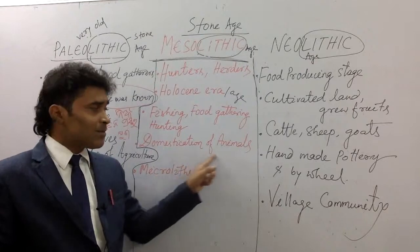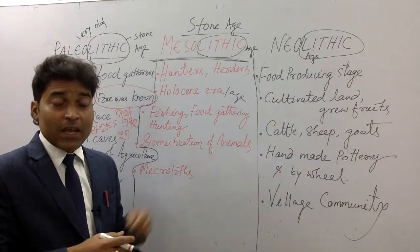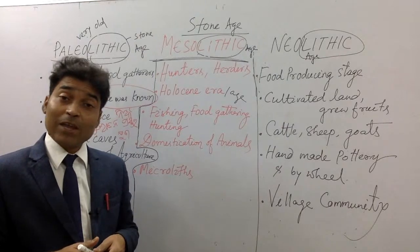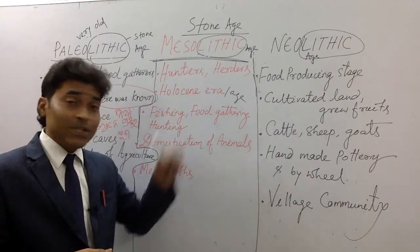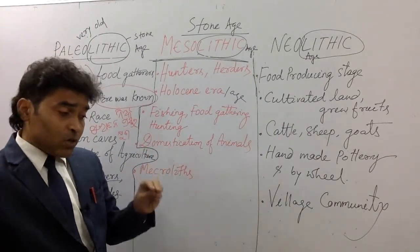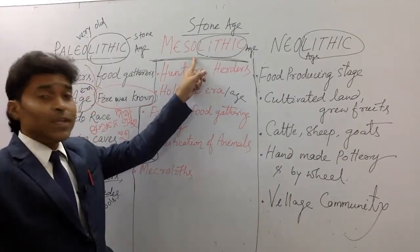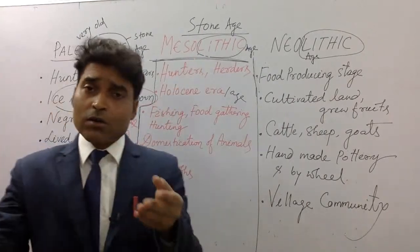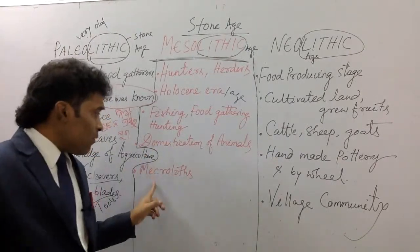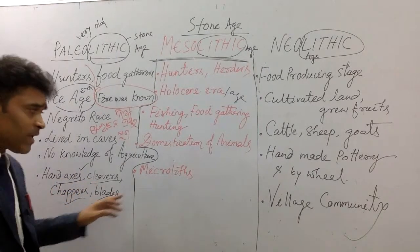An interesting and important point: domestication of animals began in the Mesolithic age. A question may be asked: in which of the following stone ages did domestication of animals start? The answer is Mesolithic age. So if you have a cat, a dog, or a rabbit as a pet — this practice started in the Mesolithic age. The tools used in this stage are called microliths — hand axes, cleavers, choppers, and blades.